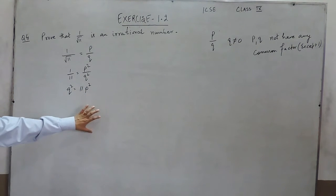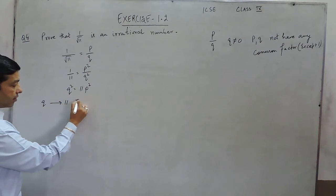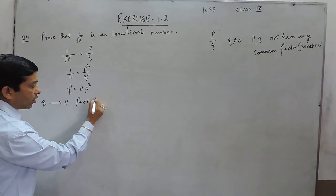11P square is divisible by 11, that means Q square is also divisible by 11, so Q has a factor 11. 11 is one factor of Q.